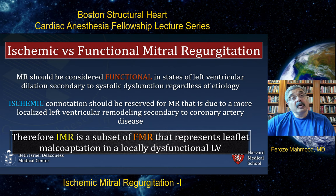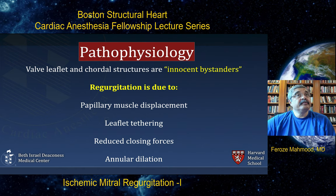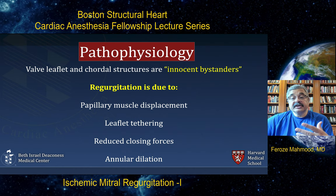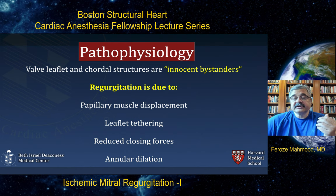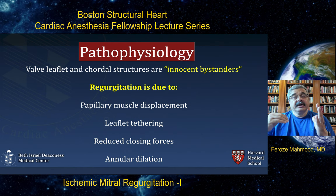The pathophysiology of ischemic mitral regurgitation is that the valve leaflets and chordal structures are innocent bystanders. The regurgitation is due to papillary muscle displacement, leaflet tethering, reduced closing forces, and annular dilation. The leaflets and chordae tendineae have no structural abnormality — they are merely being prevented from their normal function of coapting in the middle of the valve during systole to maintain systolic competence.